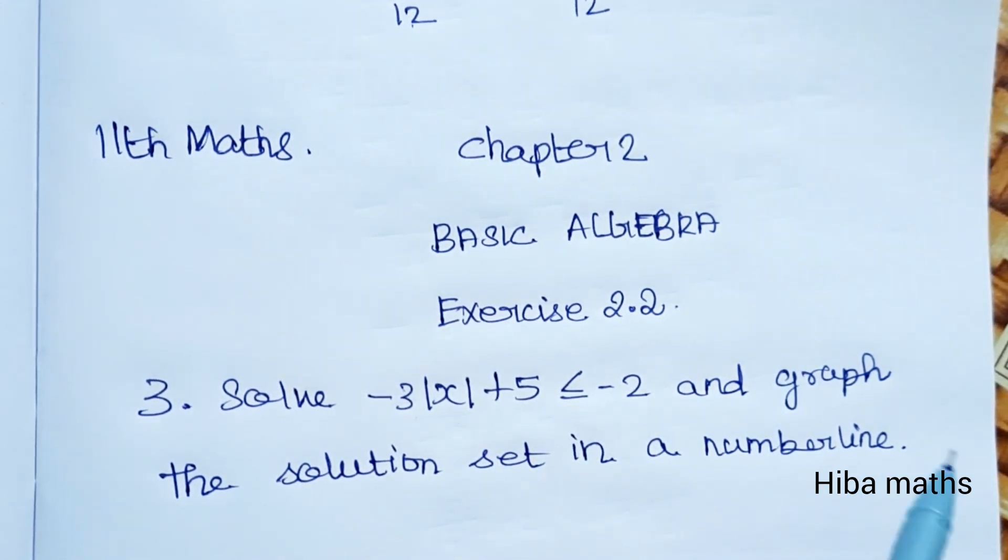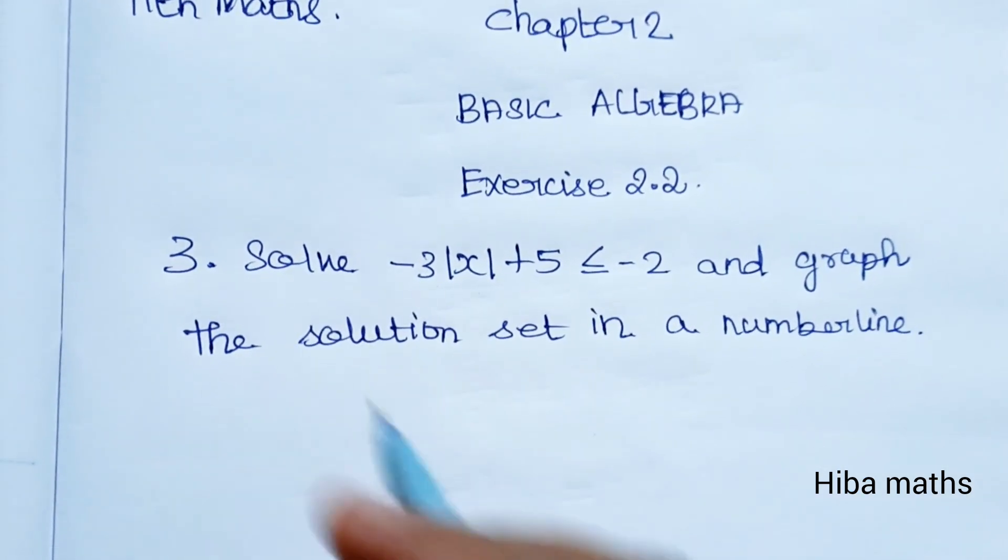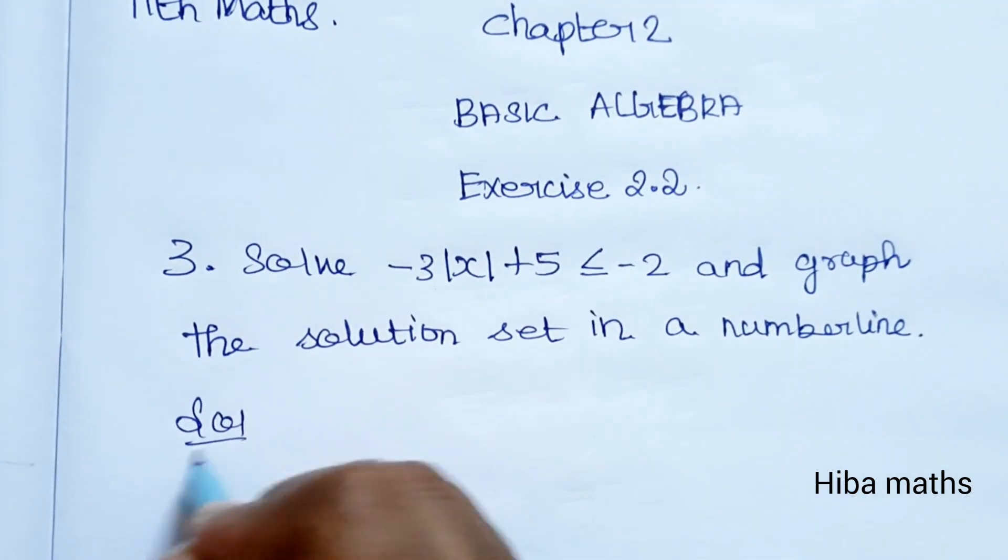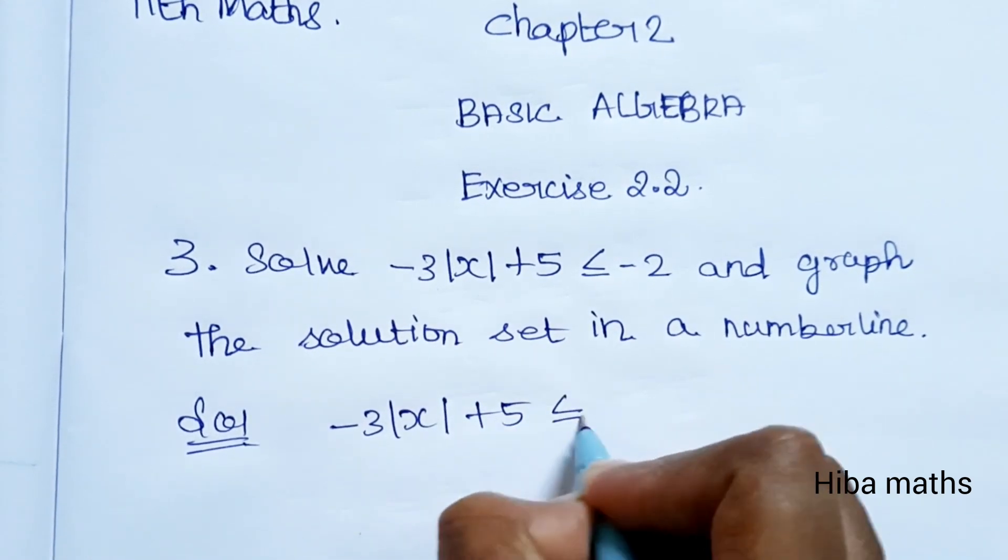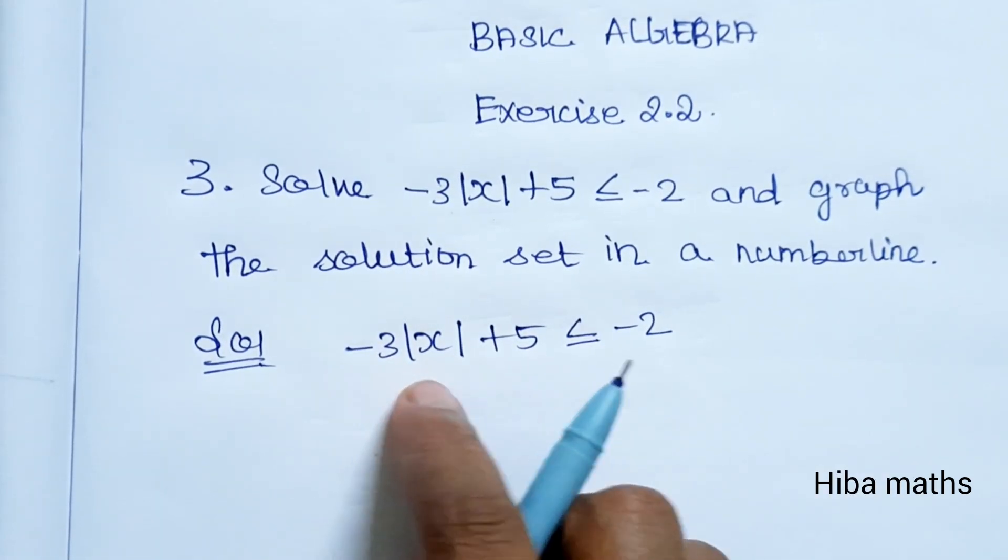We need to plot this on a number line, so we'll plot the solution on the number line. Given: -3|x| + 5 ≤ -2.